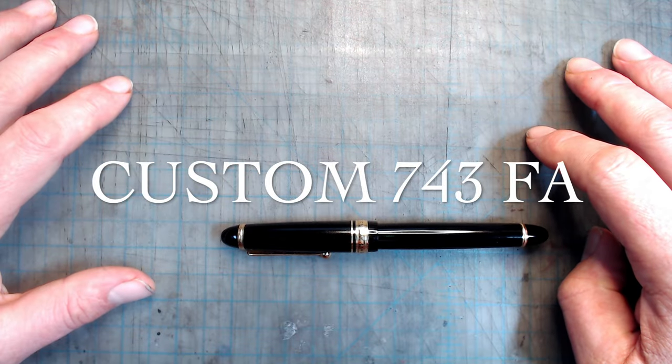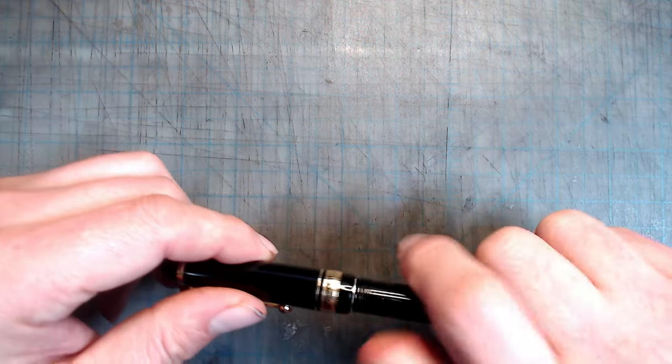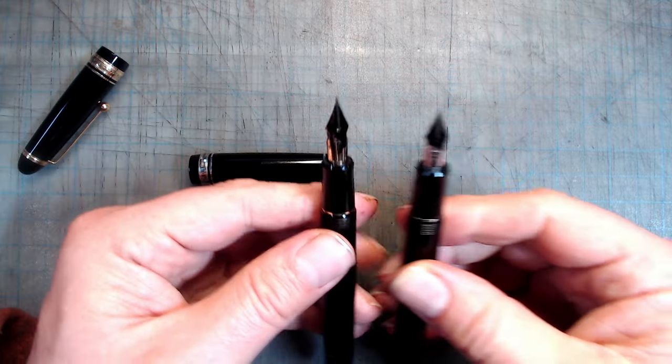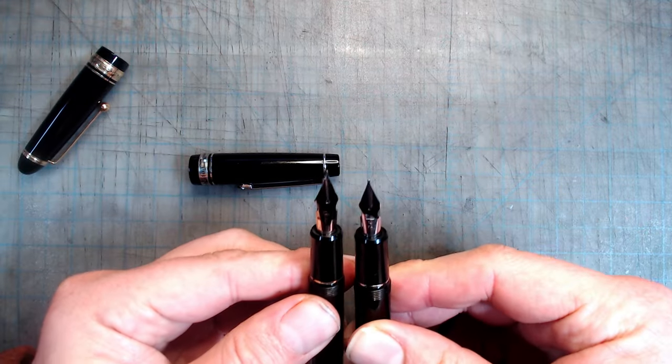Here's the completed drawing test using the Pilot 912 FA. Now let's discuss the Pilot Custom 743 FA. The nib on this pen is of the same design as the one on the 912, but is larger being the number 15 size.